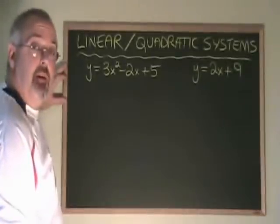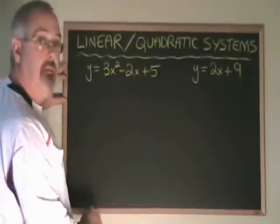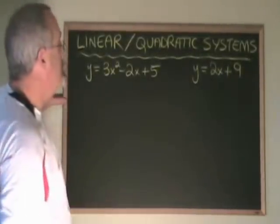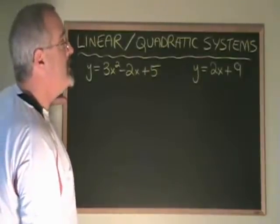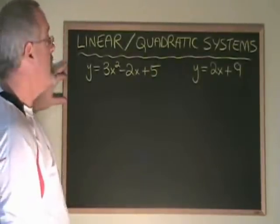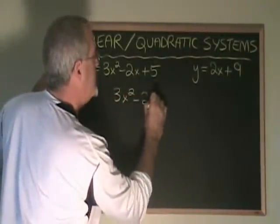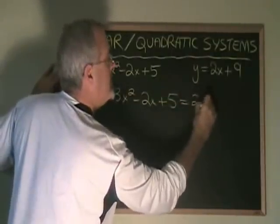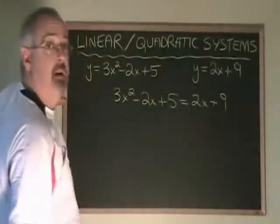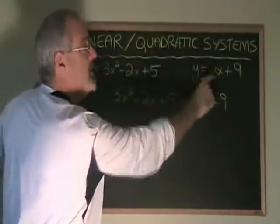What we do is use the same methods. I'm going to use comparison to solve this system. The parabola equation is y equals 3x squared minus 2x plus 5. The straight line equation is y equals 2x plus 9. Comparison allows us to write 3x squared minus 2x plus 5 equals 2x plus 9. We are comparing what y is equal to in one equation with what y is equal to in the other.